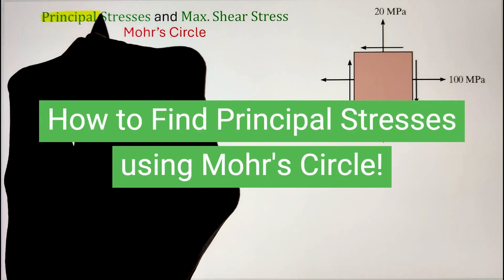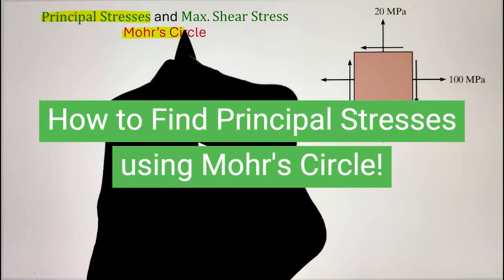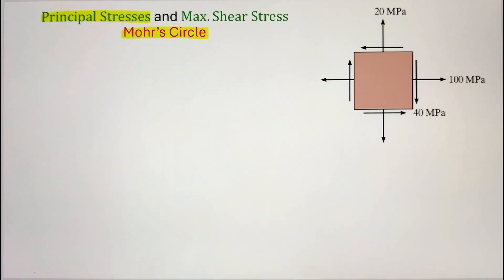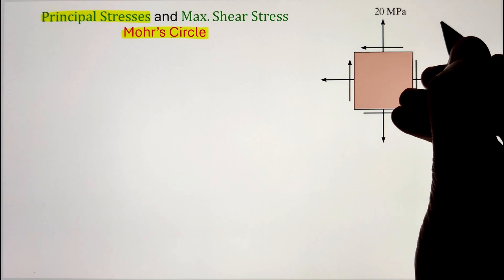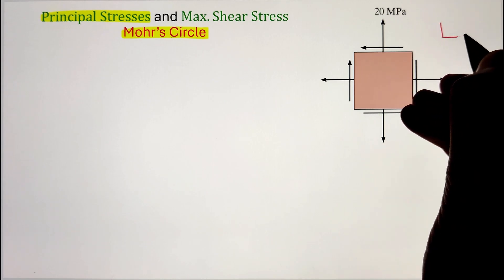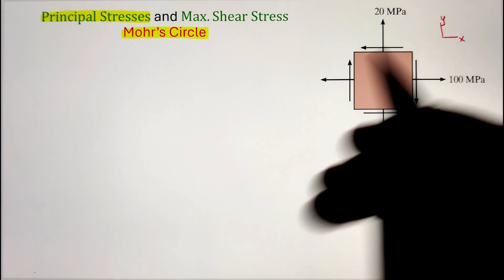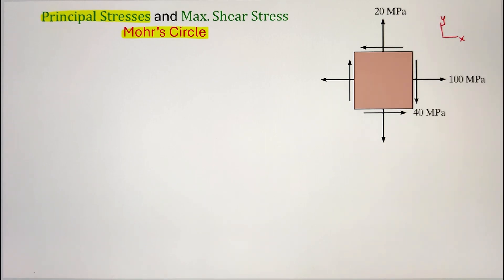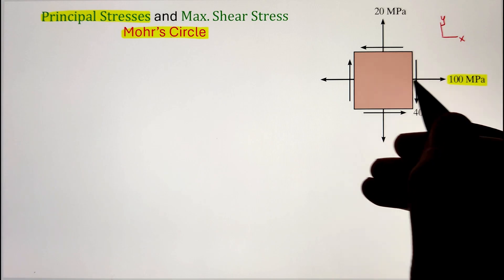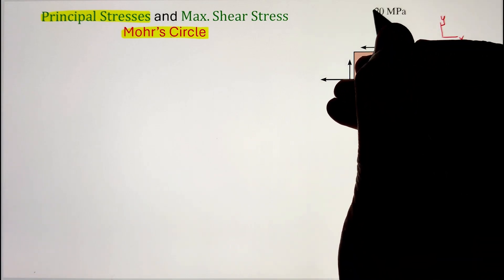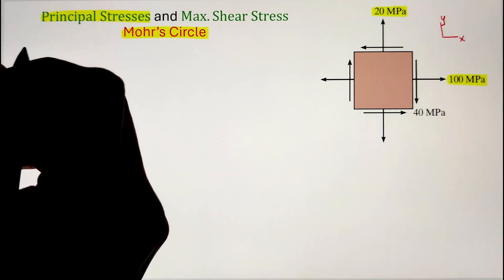In order to find the principal stresses and maximum in-plane shear stresses based on the stress element shown in the figure, we can utilize Mohr's circle for this purpose. To start, let us first identify the stresses along the x and y direction.